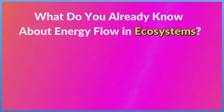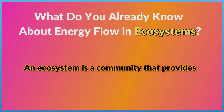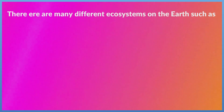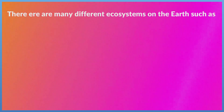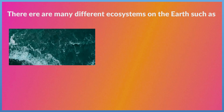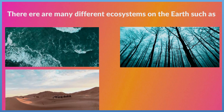What do you already know about energy flow in ecosystems? An ecosystem is a community that provides food, water, and shelter to all living organisms in it. There are many different ecosystems on Earth, such as the ocean, a rainforest, a desert, or the tundra.